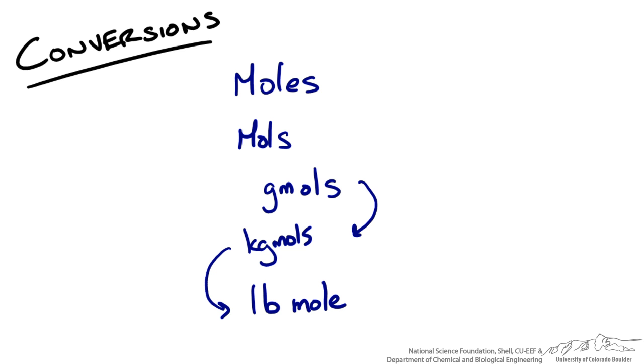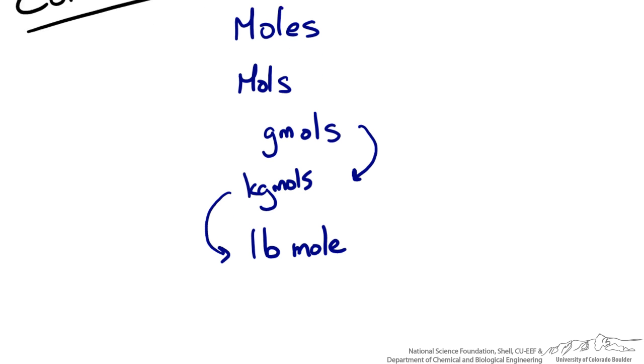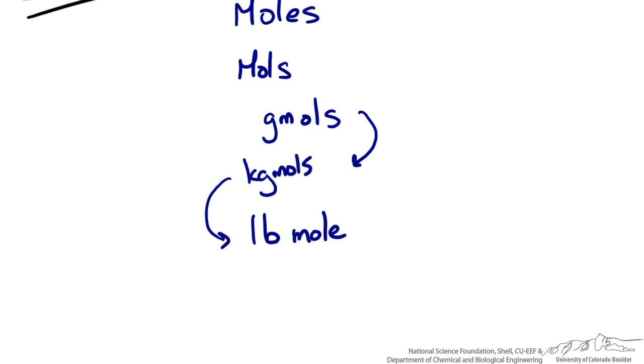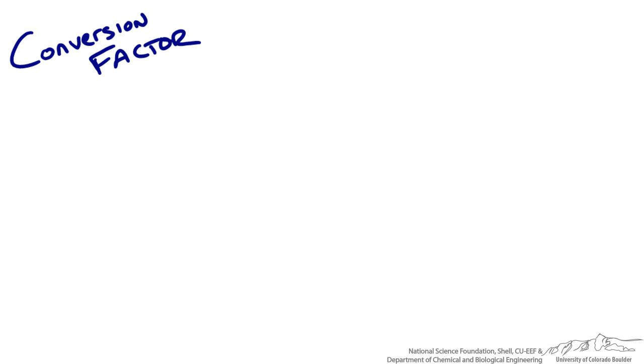So this can be one of the more confusing conversions that we do, but hopefully after this video you will see that it is pretty straightforward. With any conversion we use a conversion factor. In this case one that instantly pops to mind should be molecular weight, which reports the molar mass of an element or species. What we have seen from previous chemistry lessons is typically as a gram per mole.